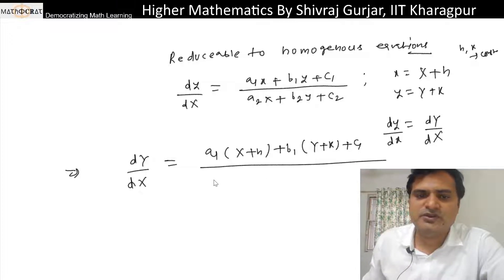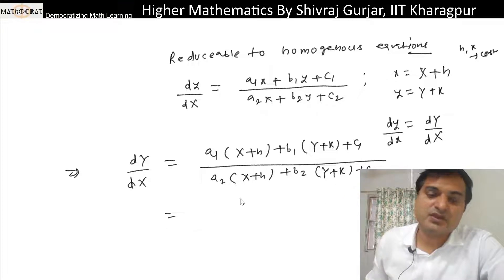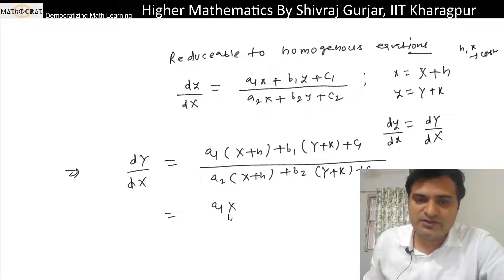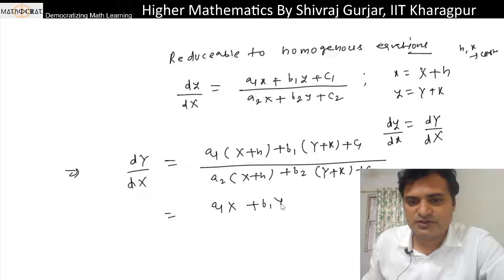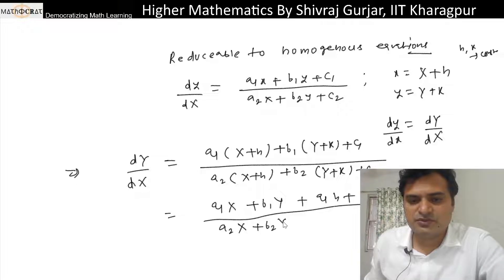This equals a1(X+h) + b1(Y+k) + c1, divided by a2(X+h) + b2(Y+k) + c2. Simplifying: a1X + b1Y + (a1h + b1k + c1), divided by a2X + b2Y + (a2h + b2k + c2).